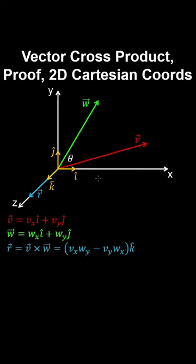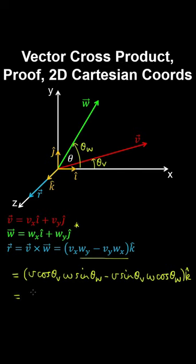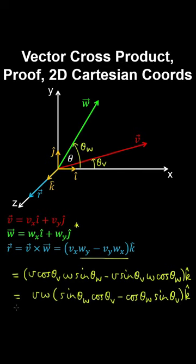Let's do a simple proof of the cross product in two dimensions. We evaluate the cross product of V and W using the determinant method, where both vectors have the following components. If V and W have angles theta_V and theta_W to the horizontal axis, we can use trigonometry to rewrite the components. Factoring out the magnitudes and using a trig identity, theta_W minus theta_V is simply the angle theta between the vectors.